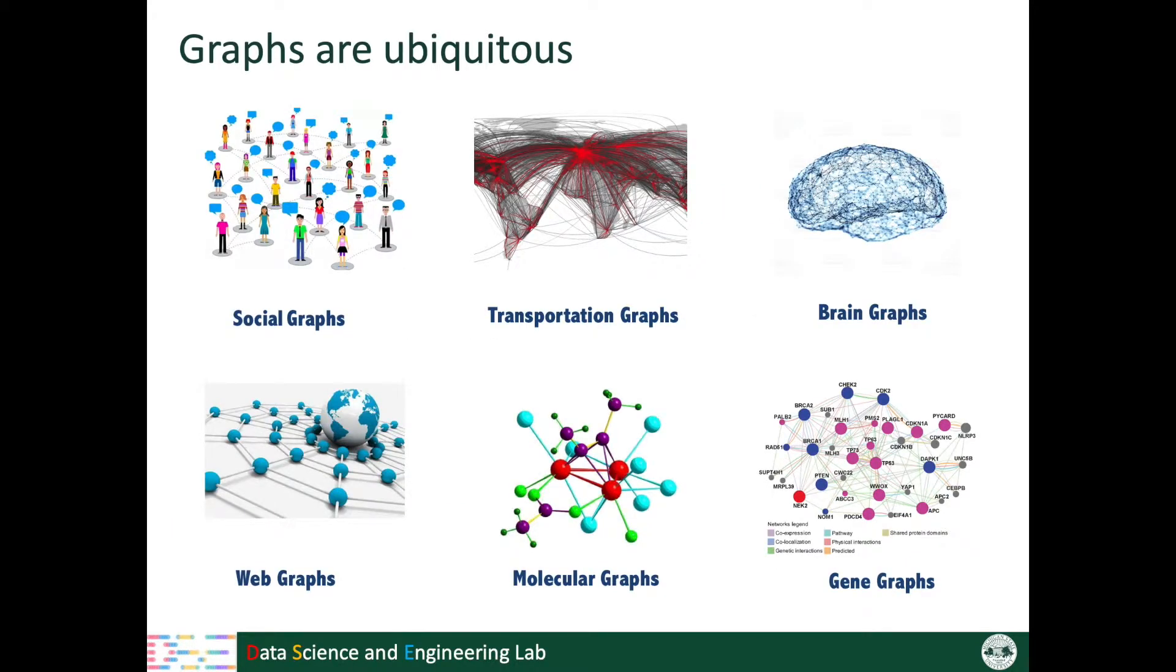Graphs are ubiquitous in the real world. Many data such as social networks and chemical molecules can be represented as graphs. Mining from graph structured data has always been an important topic in the data mining and machine learning community.